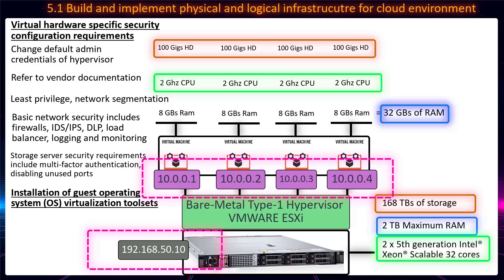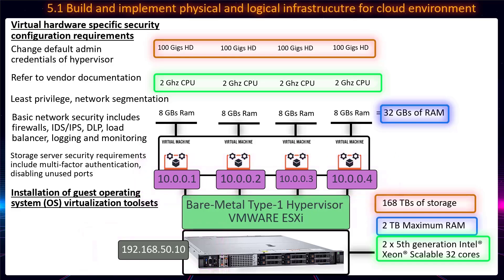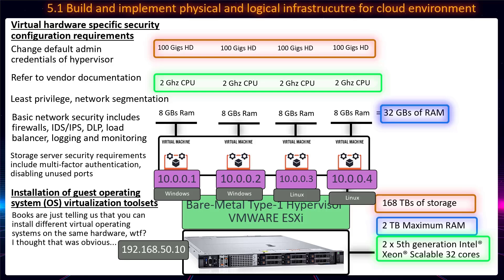All we have left in this section is installing guest operating system virtualization tool sets, which is a complicated way of saying: you can install Linux, Windows, and Ubuntu on different VMs on a single hardware server. What are we used to? We're used to buying a single server or computer and only booting up Windows or only booting up Linux on it. Or if you want, you install both but boot them up in different partitions on your hard drive — but not at the same time. One piece of hardware, one operating system — that's the traditional on-premise method.